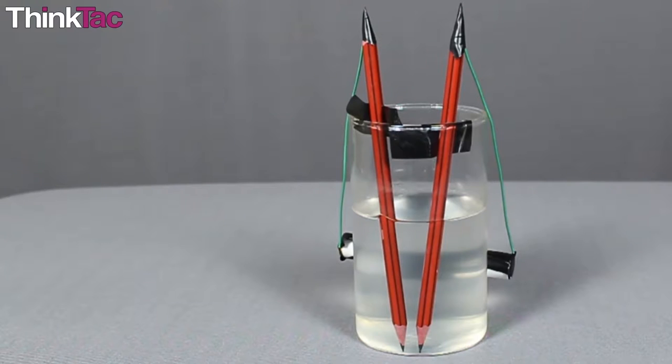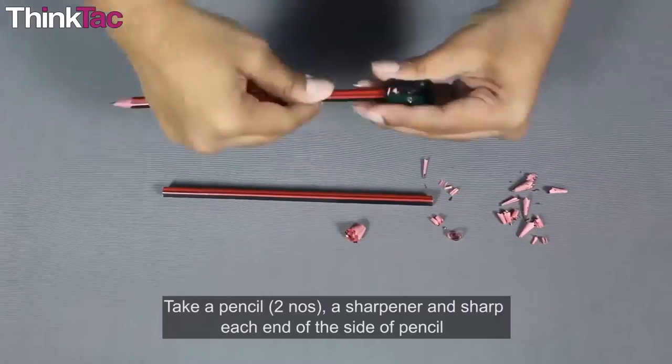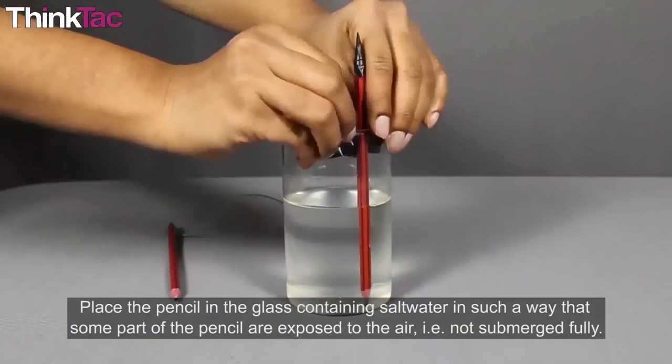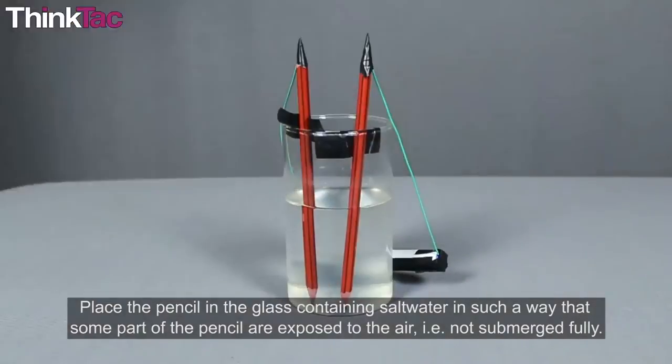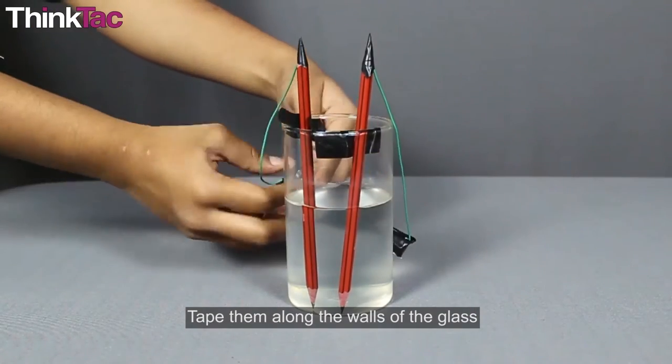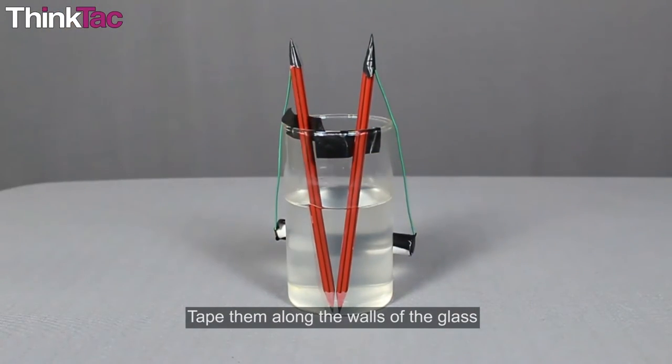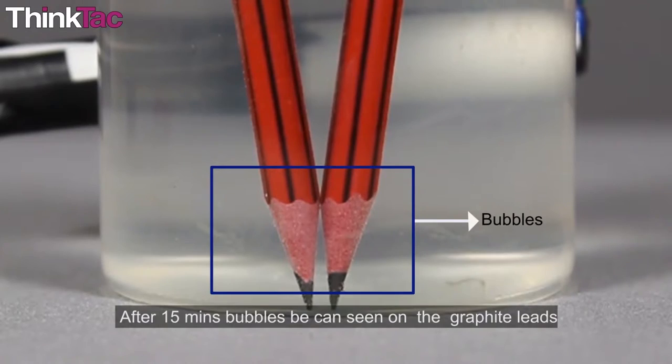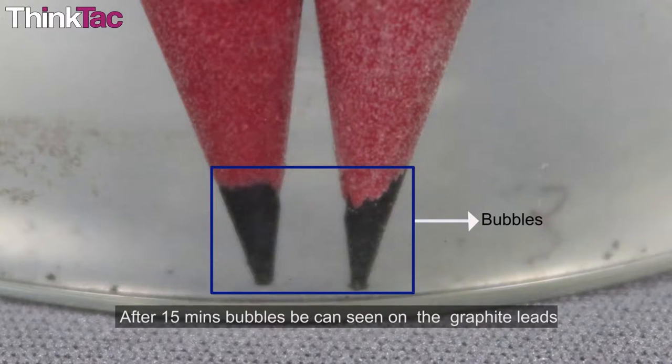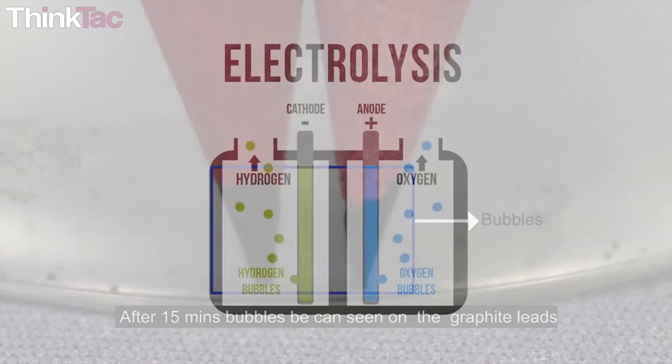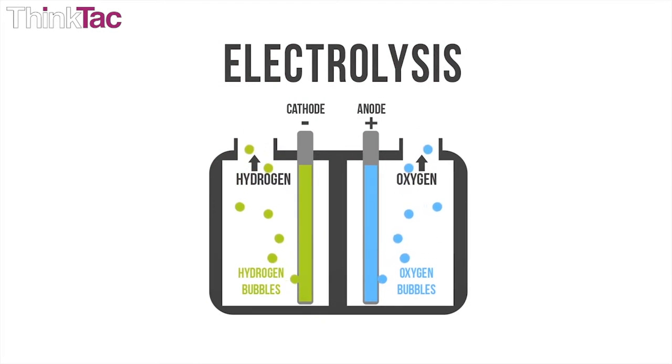One interesting variation is using two pencils instead of iron nails. Take two pencils and sharpen them from both the ends. Dip one end of both the pencils in the aqueous medium and attach the other ends with the wire to the two terminals of the cell. You will see bubbles coming out of the tips of the pencils and coming up. This happens as the pencils act as the electrodes and the graphite transports electricity.